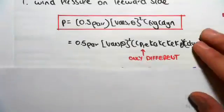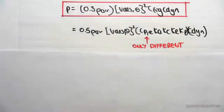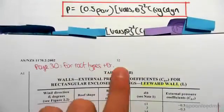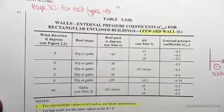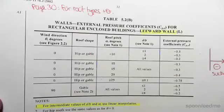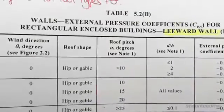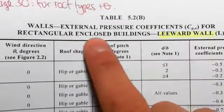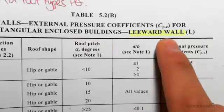We're going to take a look at where we get this value from. It's from table 5.2 on page 32. If we look at this and zoom in, it says at the top here: walls, external pressure coefficient C_pe for rectangular enclosed buildings, looking at the leeward wall.